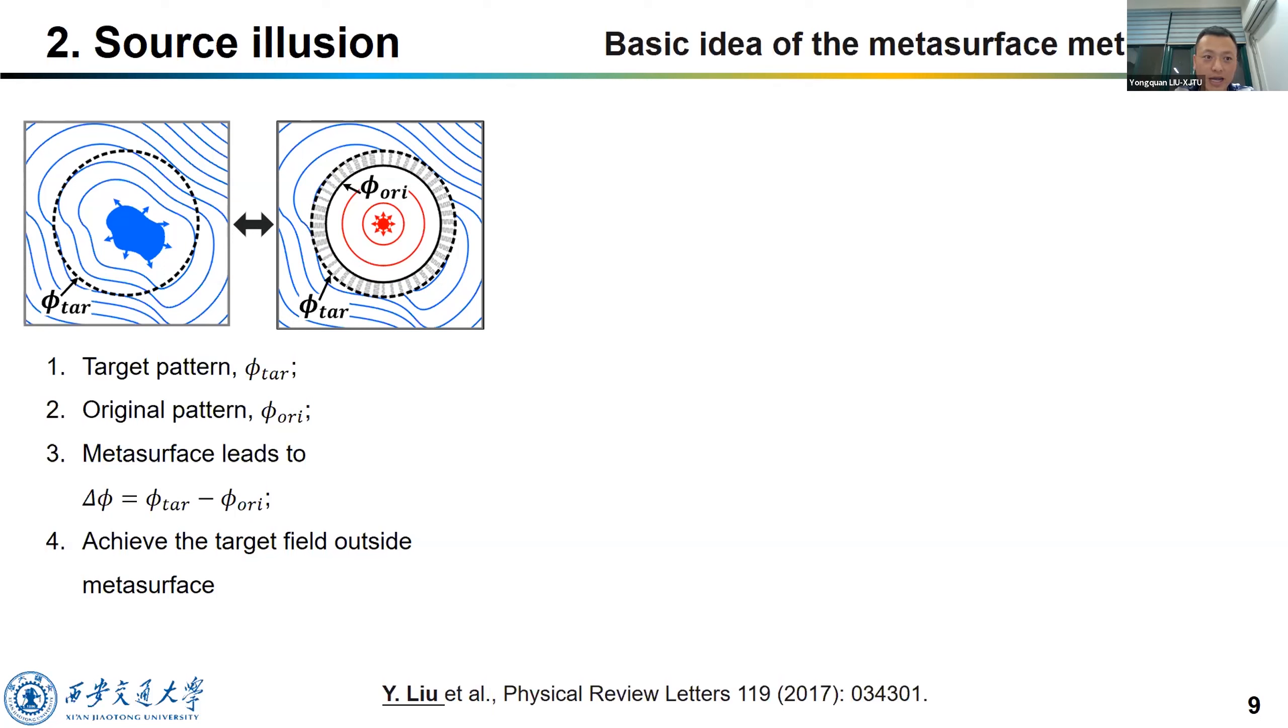As a result, we can achieve target field pattern outside the metasurface ring. By doing this, the source is thought to be the target one. So this is the basic principle of source illusion using metasurface.